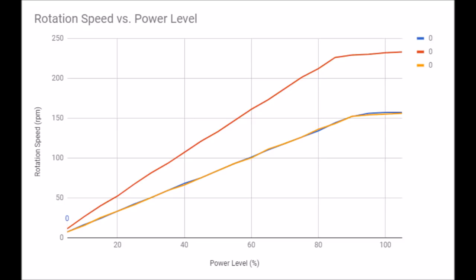At the end, after about 90% power, they start to level off, and you get these diminishing returns, where an increase in power doesn't quite give you the same increase in rotation speed.